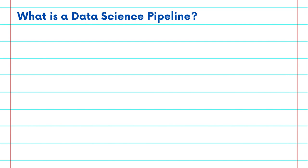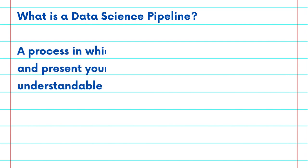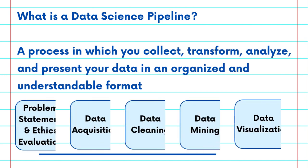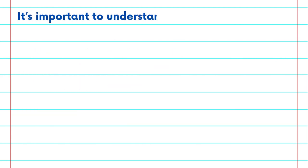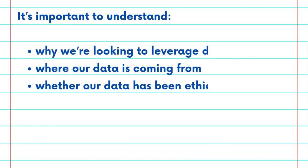Although there are a variety of examples of data science pipelines, this phrase typically refers to a process in which you collect, transform, analyze, and present your data in an organized and understandable format. But before we jump into this process, it's important that we understand why we're looking to leverage data, where our data is coming from, and whether our data has been ethically sourced.